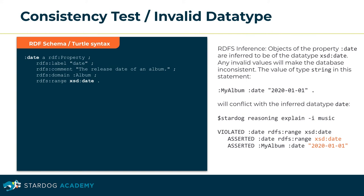This is a consistency test based on RDF schema inference. Objects of the property date are inferred to be of the data type XSD date. Invalid values will make the database inconsistent. The date specified by the example statement is of type string and will conflict with the inferred data type date. The call to Stardoc CLI command 'stardoc reasoning explain -i' reveals the inconsistency. The string property value is incompatible with and violates the modeled property range.